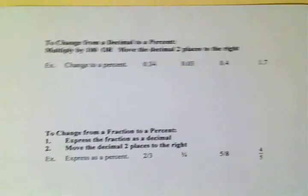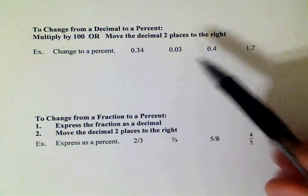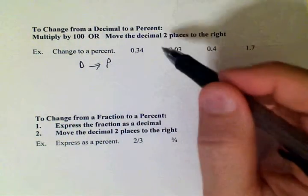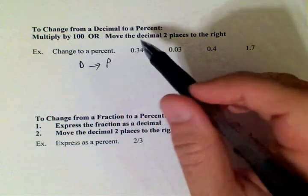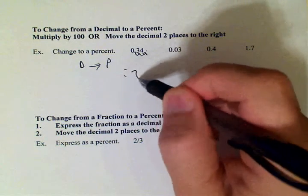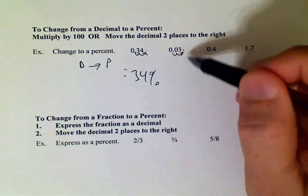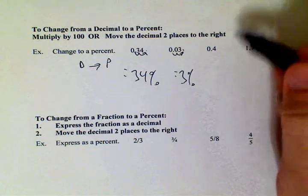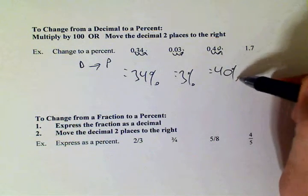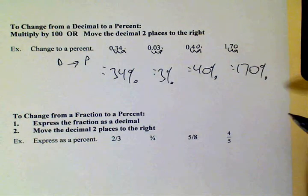Now we're going the other direction — to change to a percent. D to P: from decimal to percent, we're going to the right. Two zeros in the hundred, so that's two places to the right. Let's go one, two — and we have our answer: thirty-four percent. Let's move this decimal two places to the right — that equals three percent. For point four, when you move it two places to the right there's a number missing, so we use a zero — point four is the same as forty percent. And one point seven, two places to the right, makes it one hundred and seventy percent. Yes, you can have percents larger than a hundred.